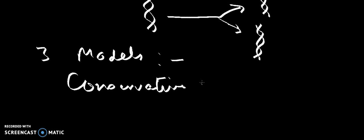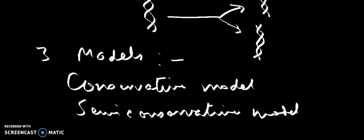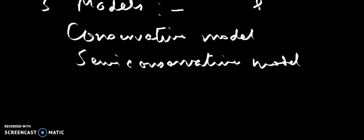Now coming to the models that were suggested, there are three types of models that have been suggested regarding the mode of DNA replication. These models are called conservative model, semi-conservative model, and dispersive model.